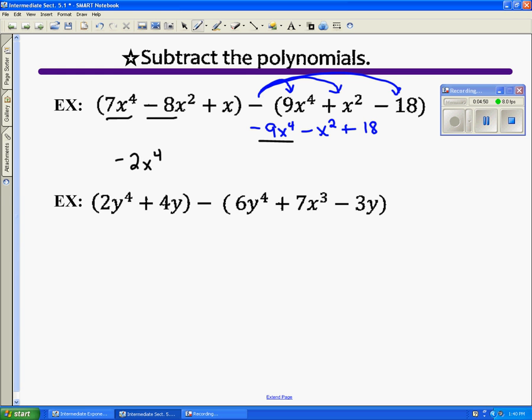I have a negative eight and a negative one. Add those together to get negative 9x². X term, it's the only one, and then constant term. This is going to be our solution.